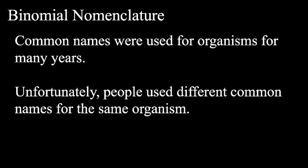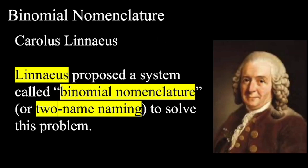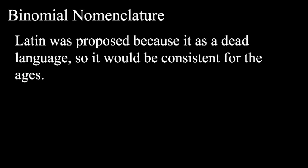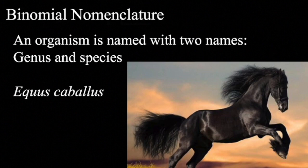This two-name naming system is known as binomial nomenclature. Common names were used for organisms for many years, but unfortunately people use different common names for the same organism. So Carolus Linnaeus proposed a system called binomial nomenclature, or two-name naming, to solve this problem. Latin was proposed because it was a dead language, so it would be consistent for the ages, and an organism is named with two names — genus and species. For example, Equus caballus, which is the name for the common horse.